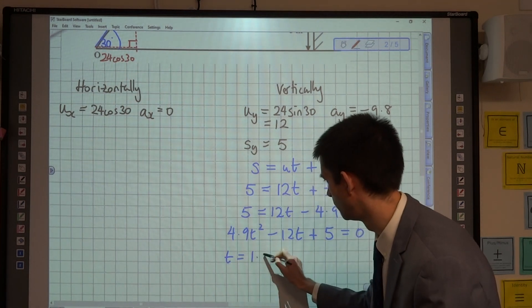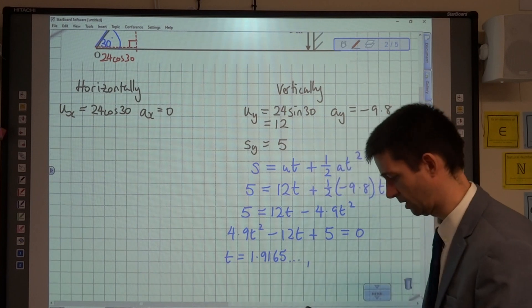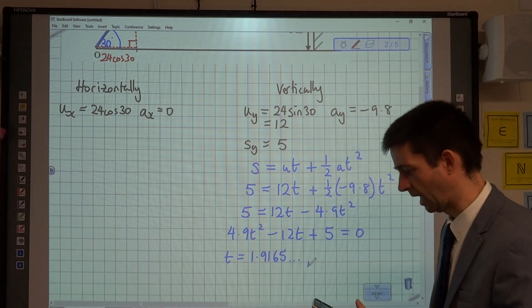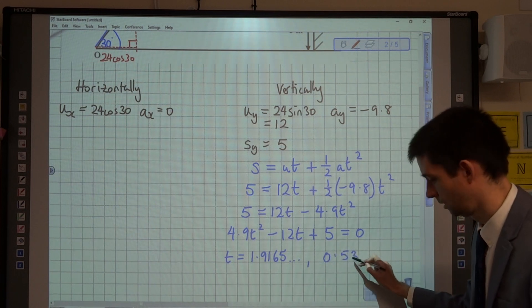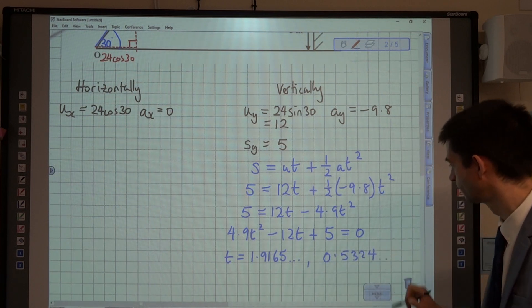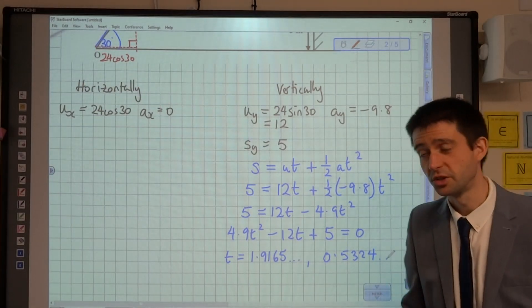One is 1.9165, etc. And the other one is 0.5324. Let's just take a moment to consider why we've got two solutions and which one we're going to use as we proceed.